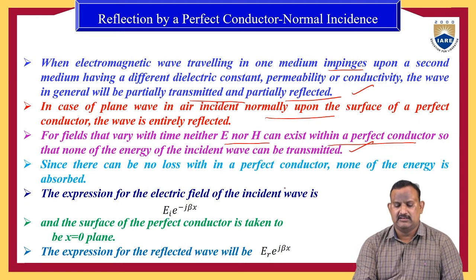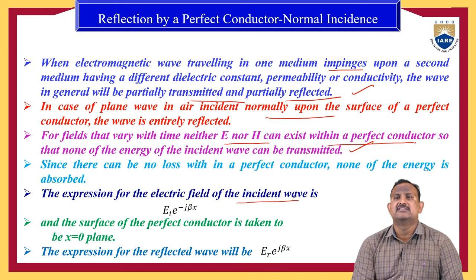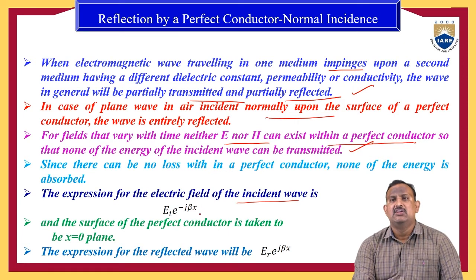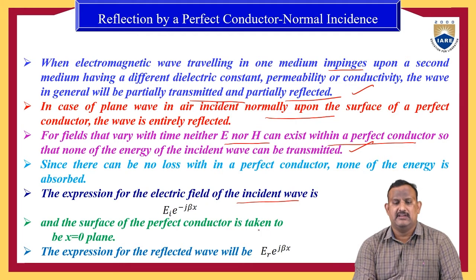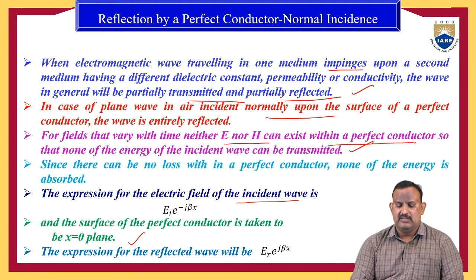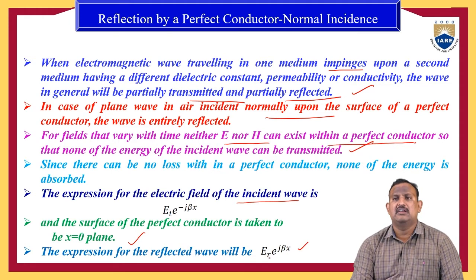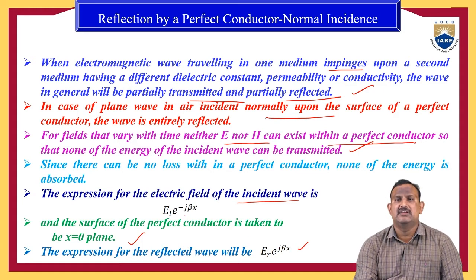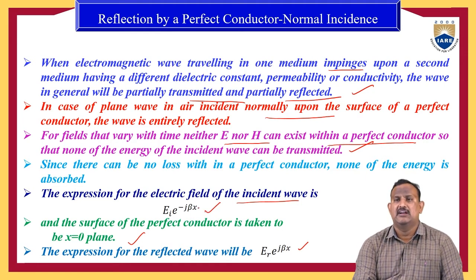The expression for the electric field intensity for an incident wave is E_I = e^(−jβx), where E_I represents the incident electric field. The surface of the perfect conductor is taken to be the x = 0 plane. The expression for the reflected wave is E_r = E_I · e^(+jβx). The incident wave is E_I · e^(−jβx) and the reflected wave is E_I · e^(+jβx).